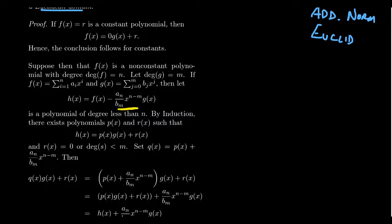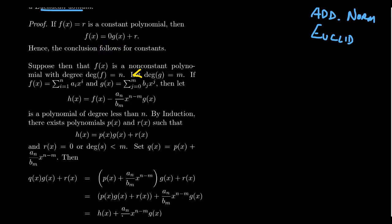In this construction, we're using the assumption that the degree of G is less than or equal to M, because otherwise the exponent N−M could be negative, which wouldn't be a polynomial. If the degree of G were actually greater than the degree of F, then F(X) = 0·G(X) + F(X), where F(X) has smaller degree — a trivial division statement. So without loss of generality, we can assume the degree of G is less than or equal to the degree of F.